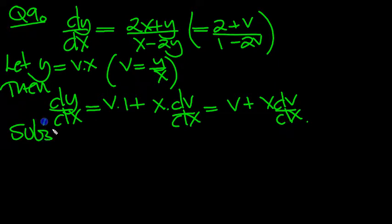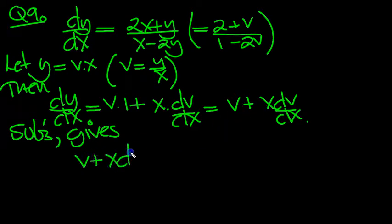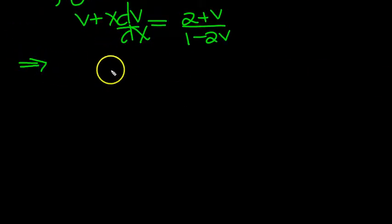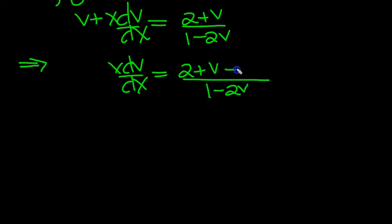So substitution then gives, dy/dx is v plus x dv/dx equals 2 plus v over 1 minus 2v. Now we'll move the v over and then tidy things up and separate the variables. So x dv/dx then is equal to 2 plus v over 1 minus 2v. Then move the v over and incorporate it into the fraction by putting the same denominator alongside the v. And that will cancel.